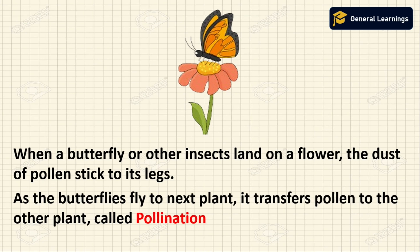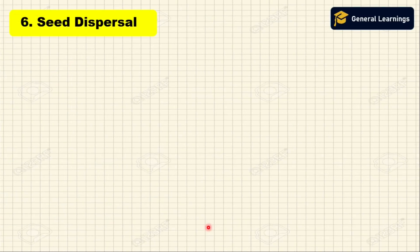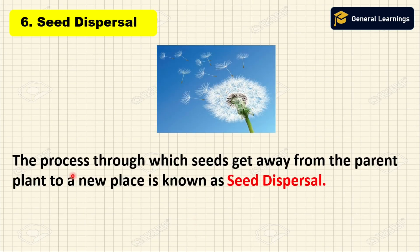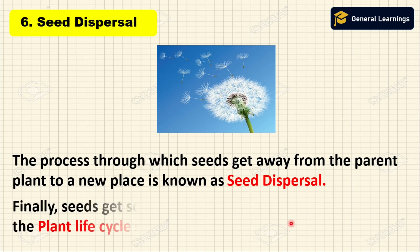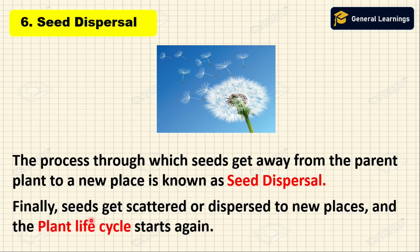The last stage is seed dispersal. The process through which seeds get away from the parent plant to a new place is known as seed dispersal. Finally, seeds get scattered or dispersed to new places, and the plant life cycle starts again.